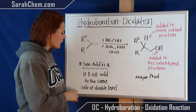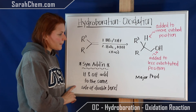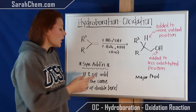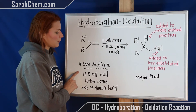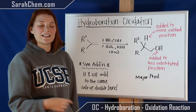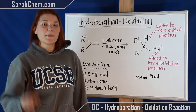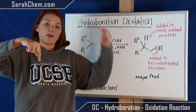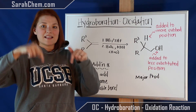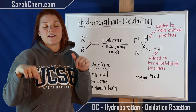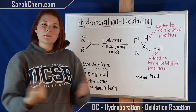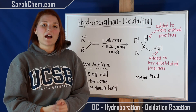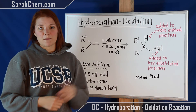Another thing to notice is if you are worried about the stereochemistry of a reaction, you want to keep in mind that this particular reaction is syn addition. That means that the H and the OH groups are going to be adding on exactly the same side of your double bond. So those are some of the things you want to keep in mind when you're predicting products for hydroboration oxidation.